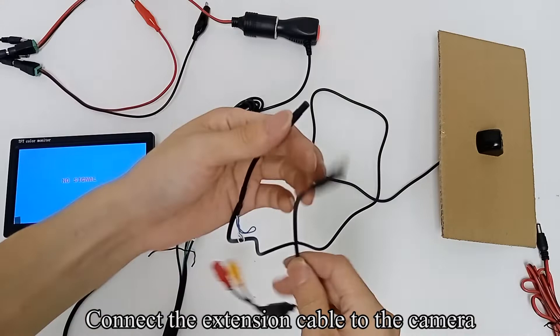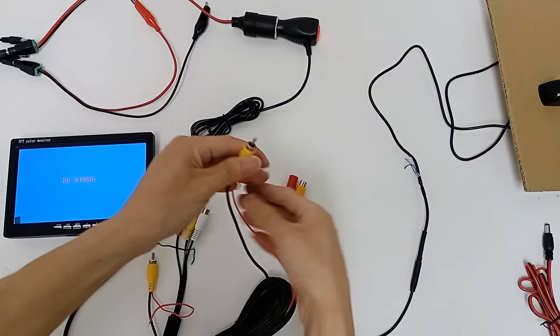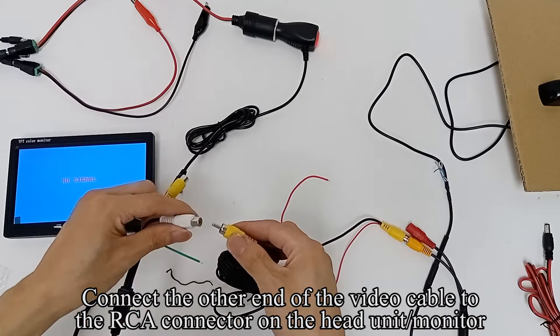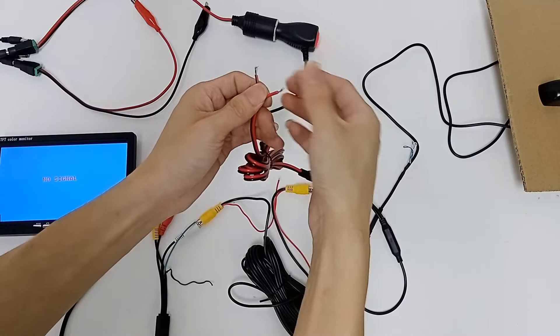Connect the extension cable to the camera. Pick up the video cable. Connect one end of the video cable to the RCA connector on the camera, and connect the other end to the RCA connector on the head unit monitor. Connect the power cable to the DC connector on the camera extension cable.